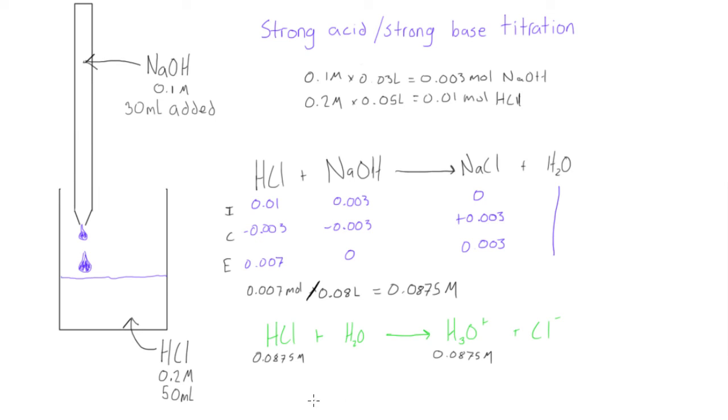Now what we can do is we know pH is the negative log of H3O plus. So, the pH in our beaker is going to be the negative log of this concentration, which is 0.0875.